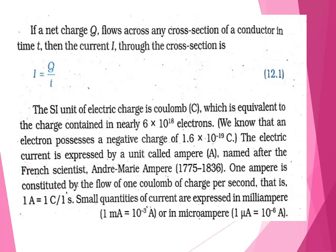If a net charge Q flows across any cross section of a conductor in time T, then the current I through the cross section is I = Q / T. This is the formula with which we can calculate the electric current, charge, or the time taken for the electric current to flow. The SI unit of electric charge is Coulomb, represented by C, which is equivalent to the charge contained in nearly 6 × 10¹⁸ electrons. The negative charge of one electron equals 1.6 × 10⁻¹⁹ C.